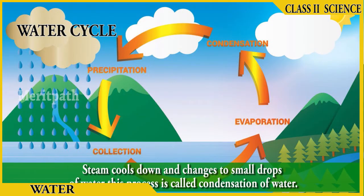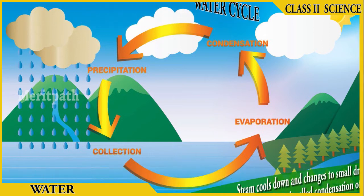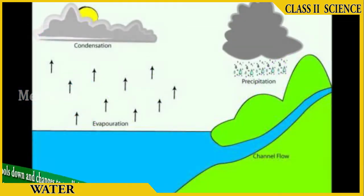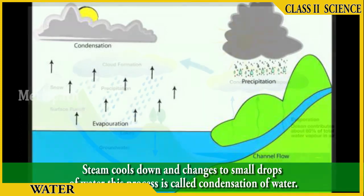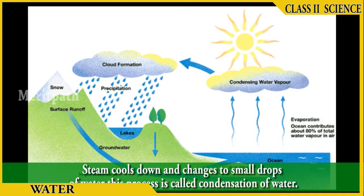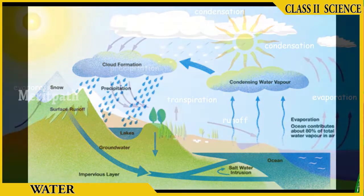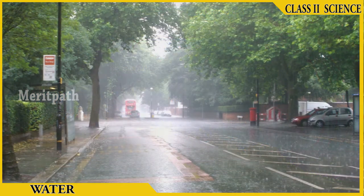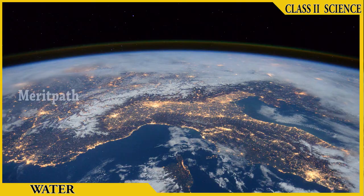In the water cycle, water vapor in the air is changed into liquid water through a process known as condensation. Condensation is crucial to the water cycle because it is responsible for the formation of clouds. These clouds may produce precipitation, which is the primary route for water to return to the Earth's surface.